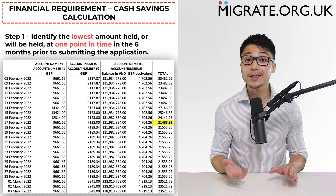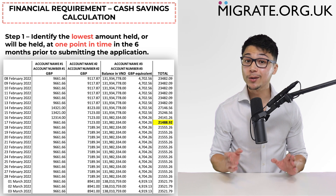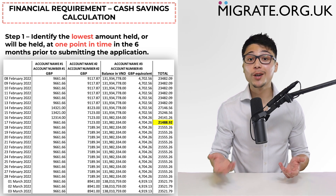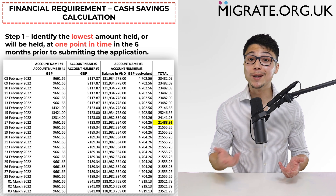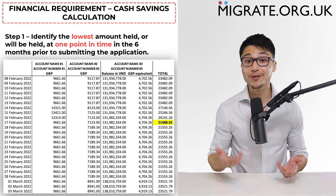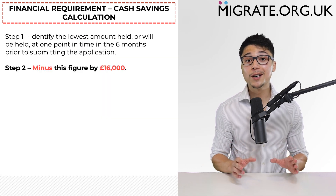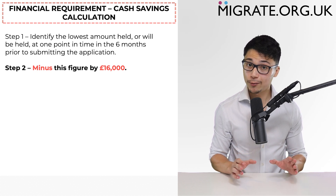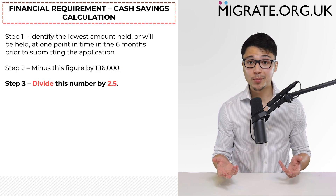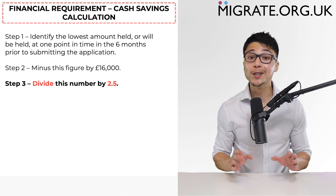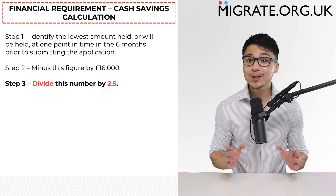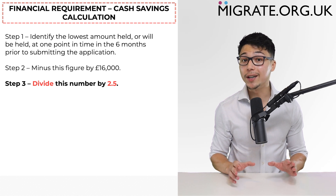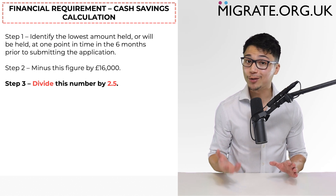And if the cash savings are not held in British pounds, the cash savings will need to be converted using the conversion calculator found on www.oanda.com, based on the conversion rate on the date that you submit the online application by paying the Home Office fees. Step 2 will require you to minus the figure in step 1 by £16,000. Step 3, the final step, will require you to divide this number by 2.5. Once you've done this, the result will be the cash savings gross annual income equivalent figure that can be included in the financial requirement.